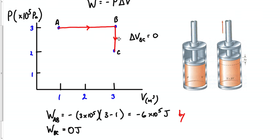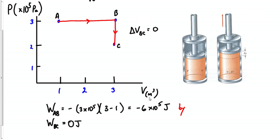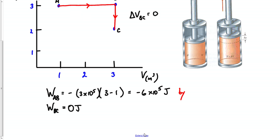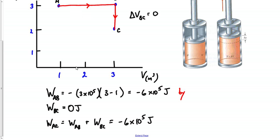This process has a term — it's called isovolumetric. In an isovolumetric process, the work done is actually 0. Sometimes the problem might also say what is the work A to C or A-B-C? All you have to do is sum up all your works. In this case, I would just add up those two works that make up the entire process — the second one was 0 — so the answer is negative 6 times 10 to the 5 joules. This is a very common type of problem.